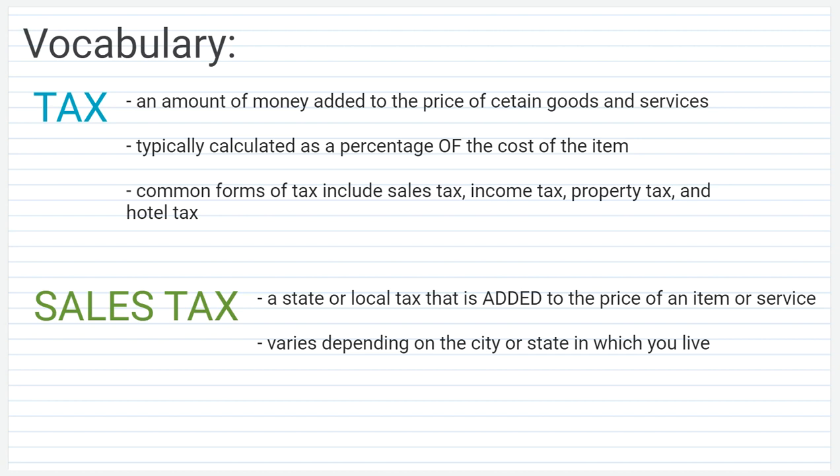Sales tax is a specific type of tax. It is a state or local tax that is added to the price of an item or service, and it varies depending on the city or state in which you live. So in Michigan, we have a six percent sales tax, but that's not true everywhere. And in some cities, there is a city tax that gets added on as well.